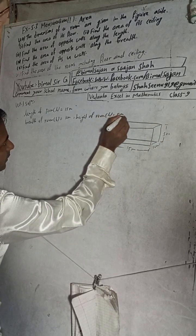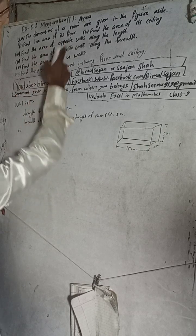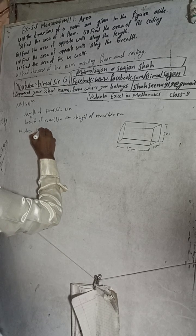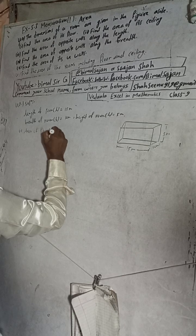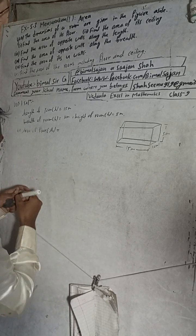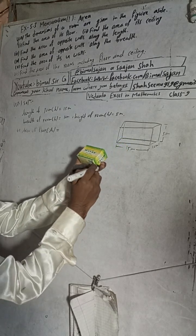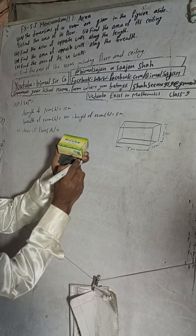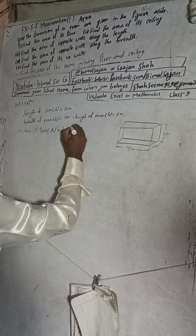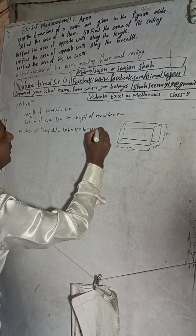Number one: find the area of the floor. Area of floor A1 is equal to L into B. This means area of the base or cross section. So A1 = 15 × 10 = 150 meter square.